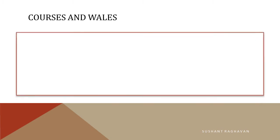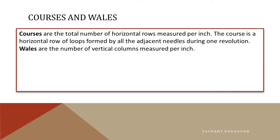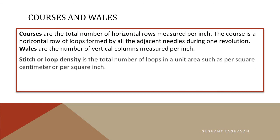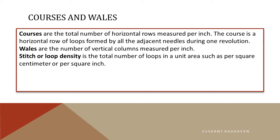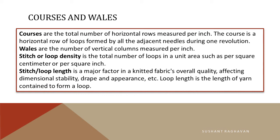Courses are the total number of horizontal rows measured per inch. A course is a horizontal row of loops formed by all active needles during one revolution. Wales are the number of vertical columns measured per inch. Stitch or loop density is the total number of loops in a unit area such as per square cm or per square inch. Stitch or loop length is a major factor in knitted fabric's overall quality, affecting dimensional stability, drape, and appearance. Loop length is the length of yarn contained to form a loop.